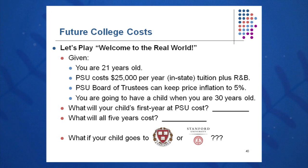So again, future value equals present value times 1 plus R to the T. So I would take $25,000 times 1.05 to the 27th power. That's nine years until I have the child plus 18 years until that child goes to college. And I get an answer of about $93,000 per year.